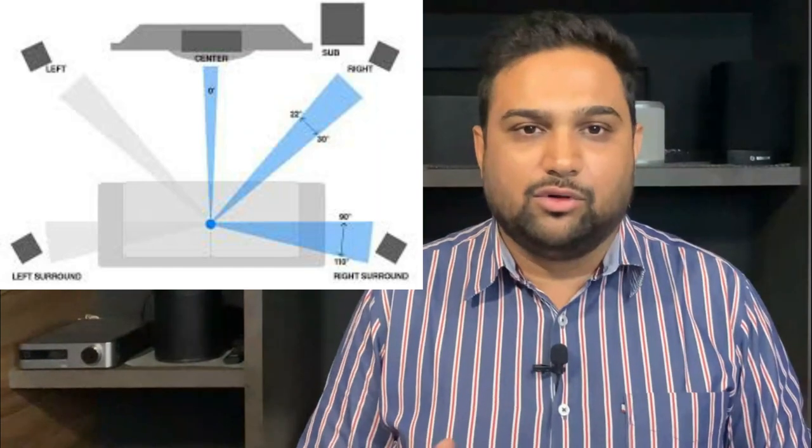There are also many other channel formats beyond 5.1 and below it. A 2.1 channel system has front left and right speakers plus a woofer. Then there's 3.1.2, which adds Dolby Atmos speakers. The Dolby Atmos terminology can go up to 7.2.4, 9.2.8, and beyond. We'll talk about those separately, but this video is dedicated to understanding the 5.1 channel system.